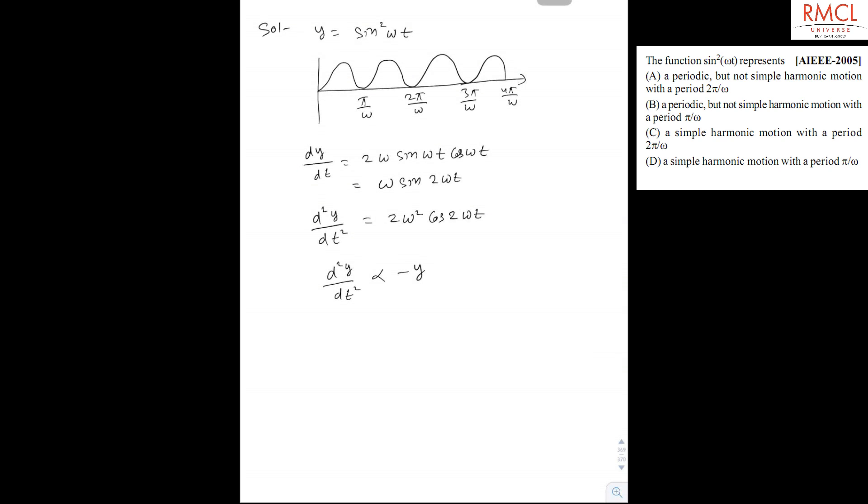But periodic, it is a periodic, so time period will be t equal to pi by omega. So B is the correct option - it is a periodic but not simple harmonic motion with time period pi by omega. So B is the correct option.